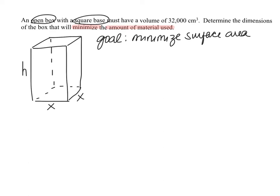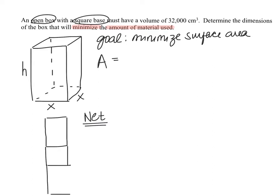Now let's talk surface area — I'll use A for surface area. We need the area of all the different faces added together. It helps to draw what's called a net: a pattern for this three-dimensional shape opened up and laid flat. We have a square base, a rectangle on the back, an equivalent rectangle on the front, and another rectangle on each side — a pattern to make this box.